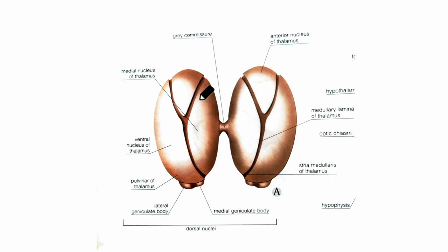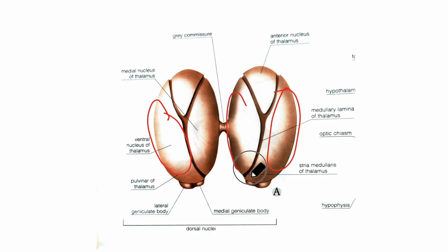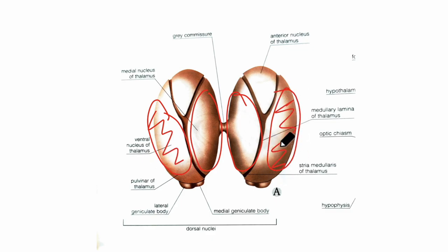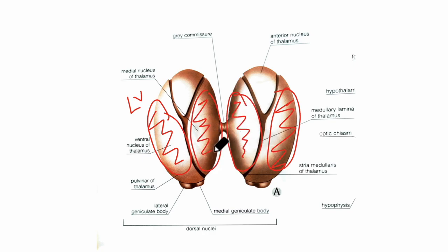The pulvinar overhangs the lateral and medial geniculate bodies, as you can see right here. Now let's learn about the superior surface of the thalamus. The superior surface is divided into a lateral ventricular part and a medial extraventricular part. The lateral ventricular part forms the floor of the central part of the lateral ventricle. The medial extraventricular part is covered by the tela choroidea of the third ventricle.